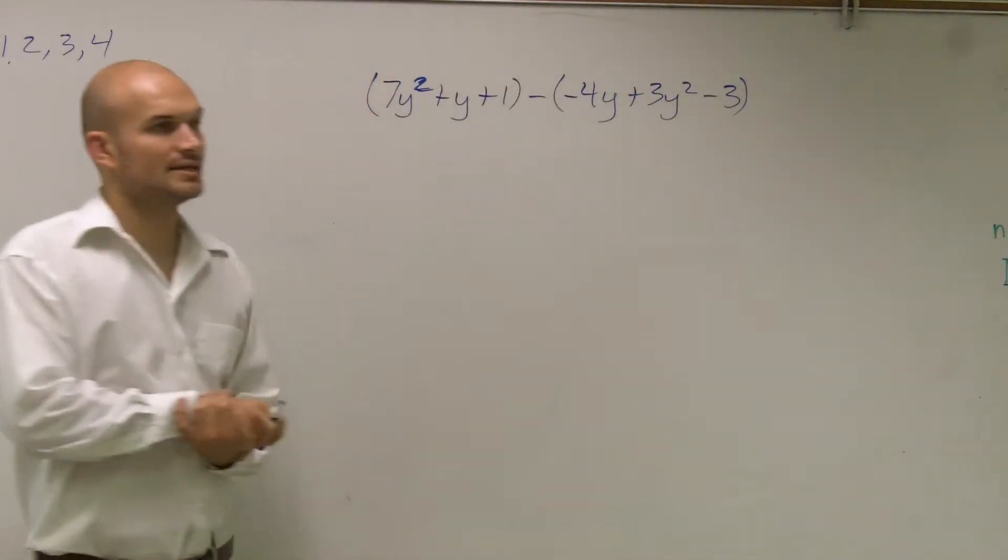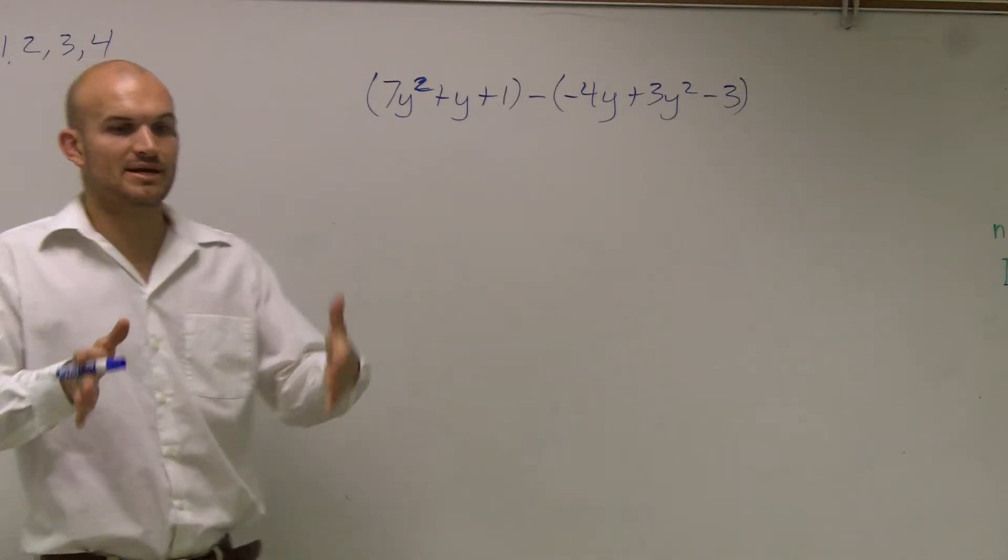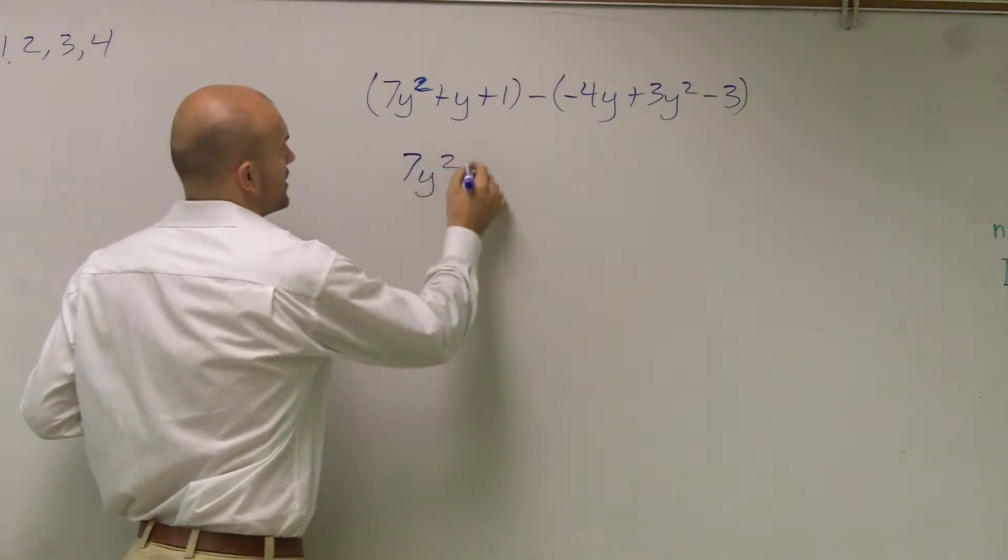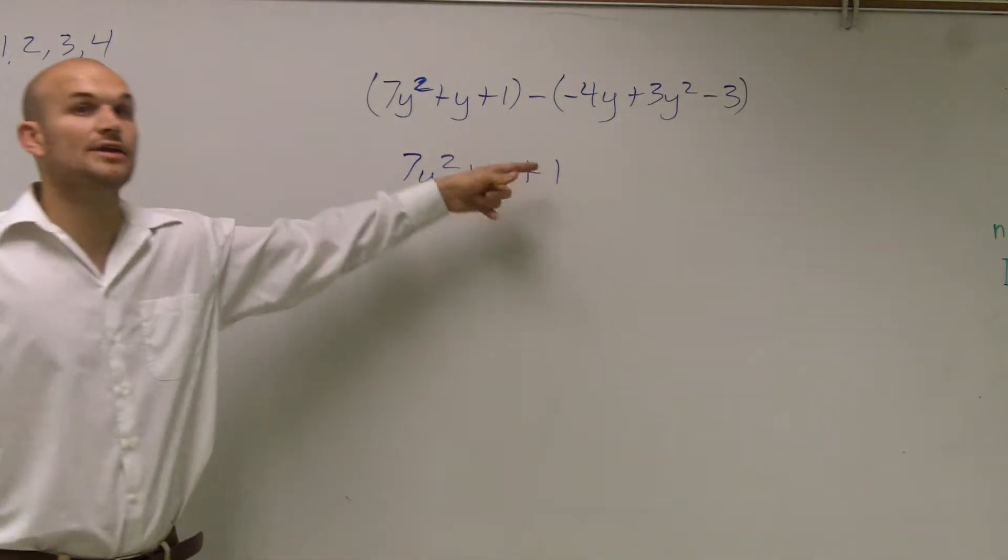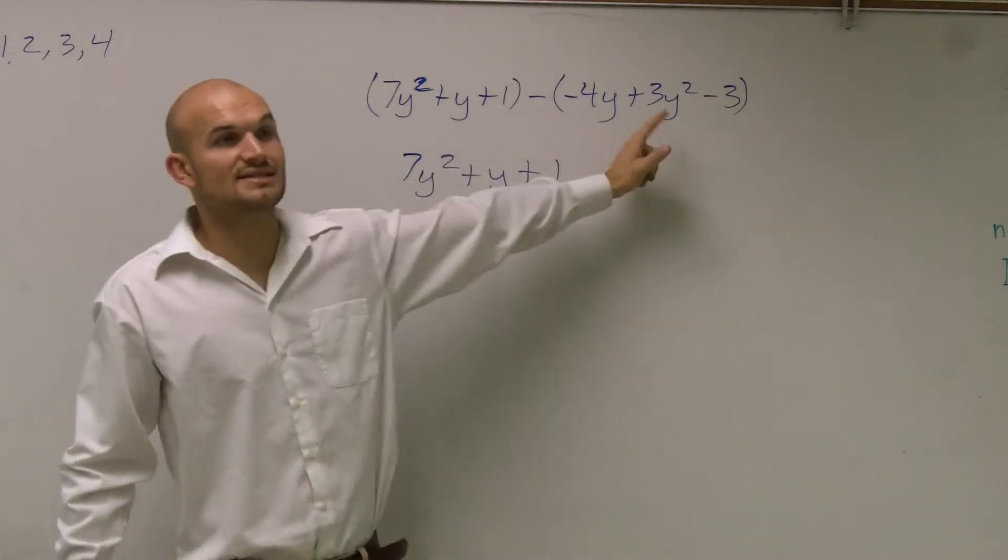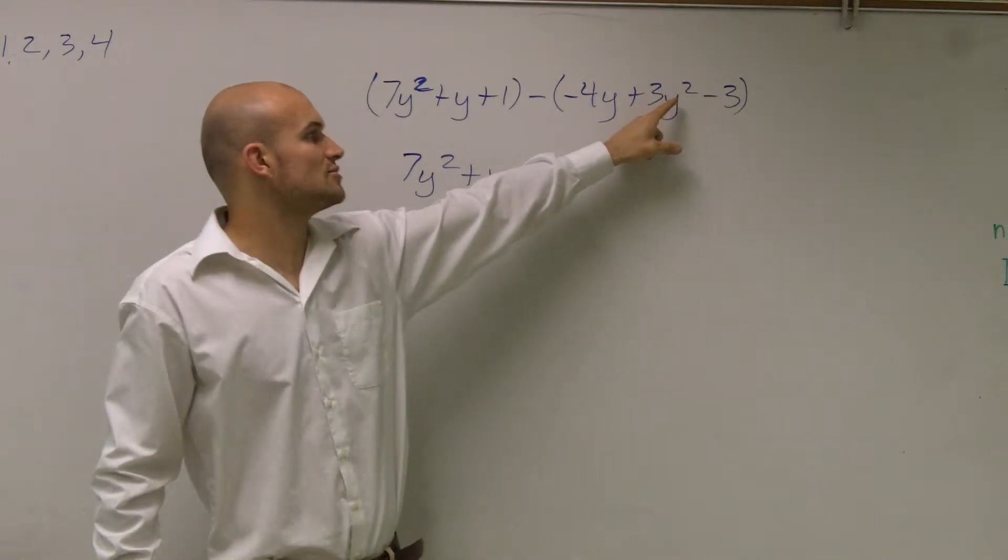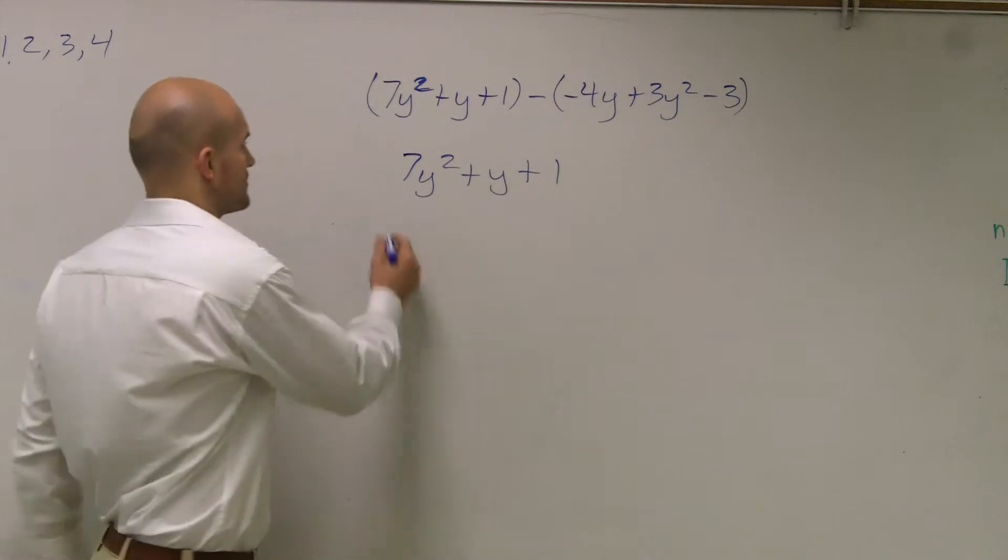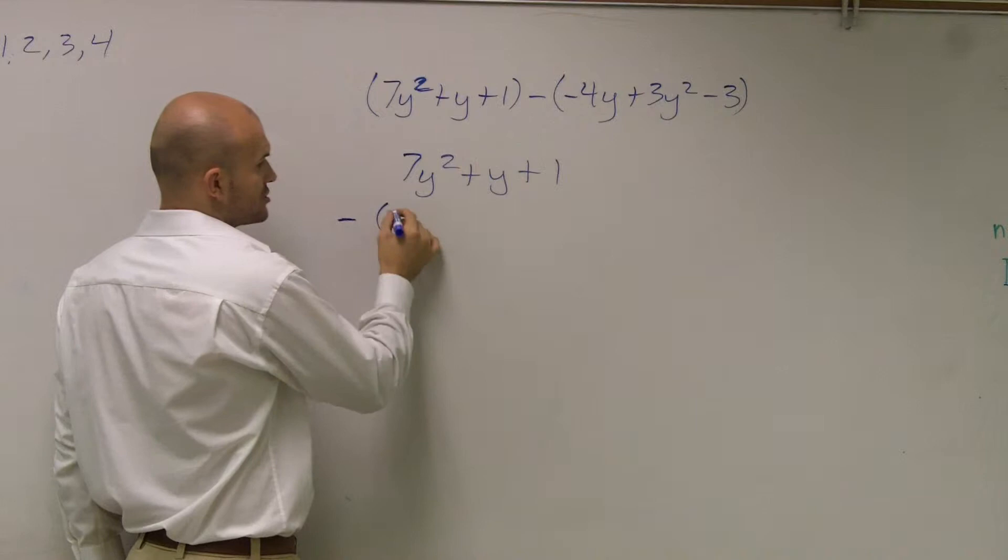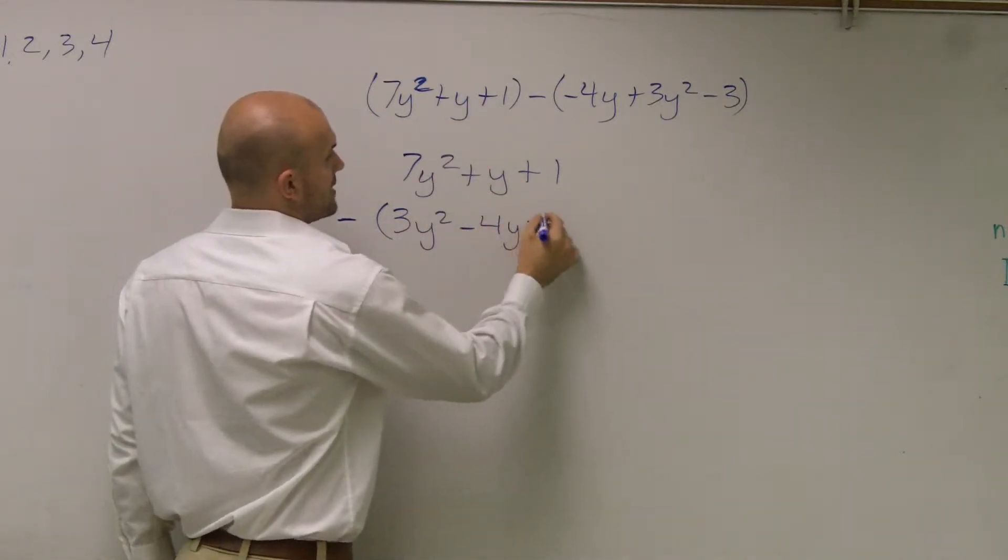Now, I really don't like to put these when I'm doing them vertically. You've got to make sure that they're aligned correctly. So I'm going to write this as 7y squared plus y plus 1. That's in standard form, so I like that. I want to keep it in standard form. This is not in standard form because my 3y squared is my highest degree. So what I'm going to do is I'm going to rewrite this problem minus, I'm going to rewrite this problem below. So it would be 3y squared minus 4y minus 3.